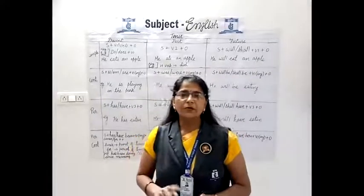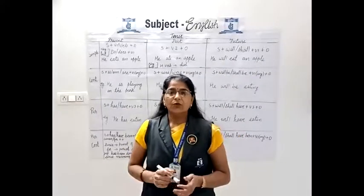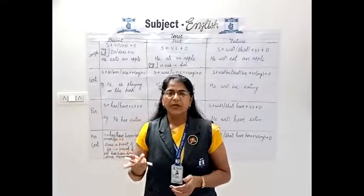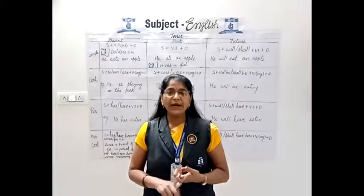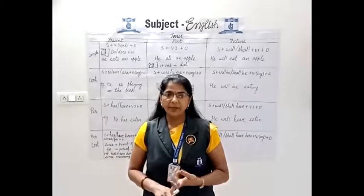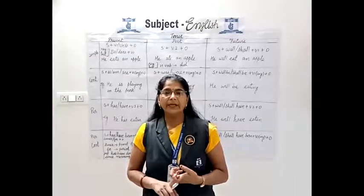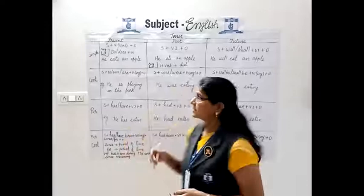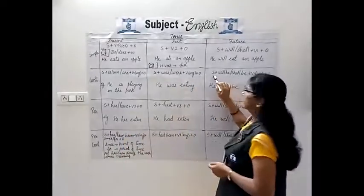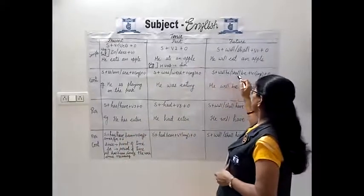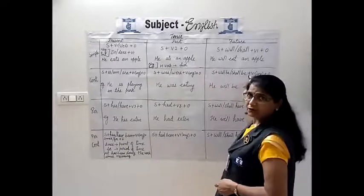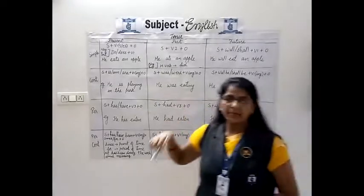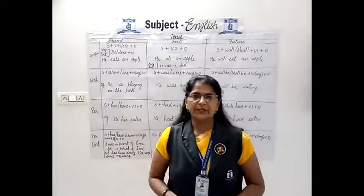Moving towards future continuous tense — it shows that the action will continue at some time in the future. Example: 'He will be coming next week.' Structure: subject plus will be/shall be plus V1-ing plus object. Example: 'He will be eating.' That is future continuous tense.